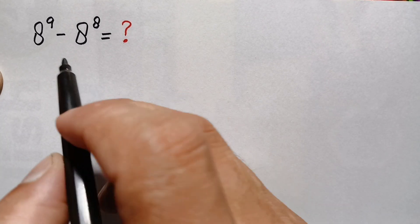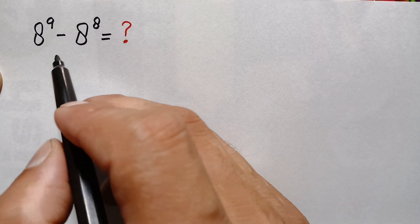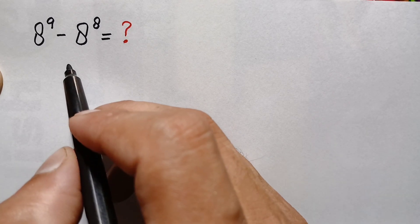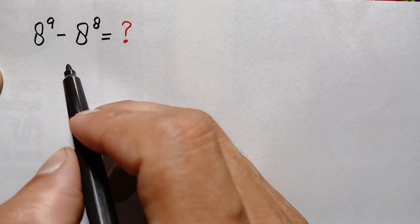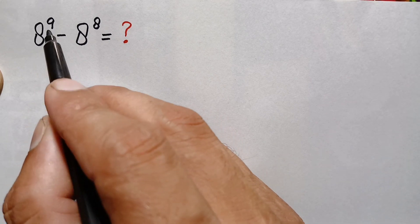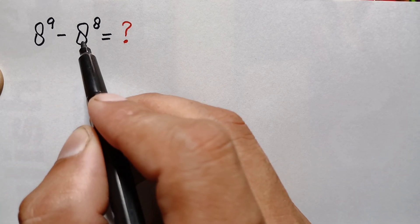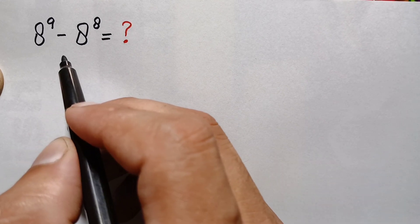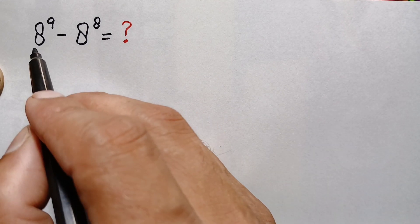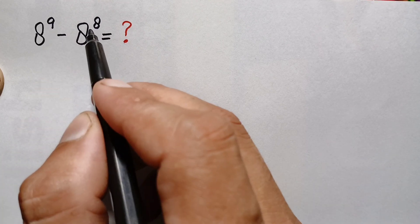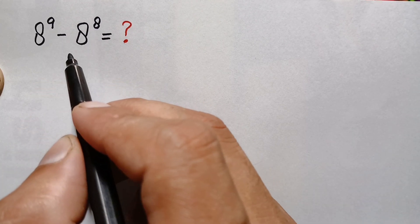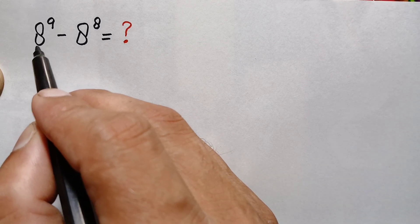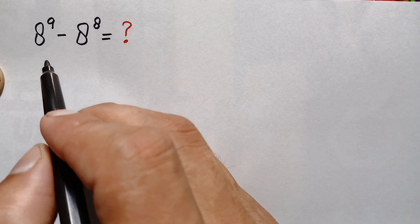Hello everyone, you are welcome. How to solve and find the value of this beautiful simplification math problem using different exponential identities and without using any calculator: 8 raised to power 9 minus 8 raised to power 8. We can solve this problem using two different methods. The first is to find the value of 8⁹ and 8⁸ and subtract them. The second method is to take out 8⁸ as a common factor.